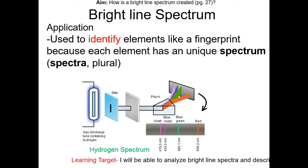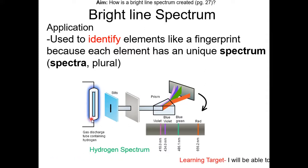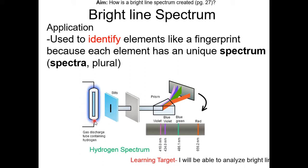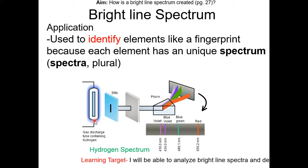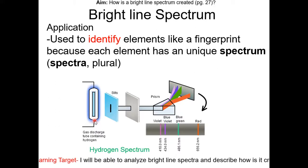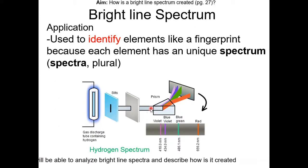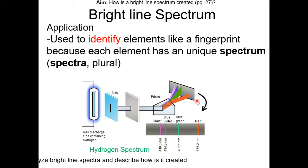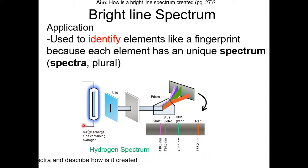Let's go over how a bright light spectrum works. Here we have a discharge tube containing hydrogen gas. We're going to heat up this tube until the atoms are excited. Once they're excited, they'll eventually return back to the ground state, and when they do, they release energy in the form of light. The light passes through this prism, eventually creating a spectrum of hydrogen gas in this example. We'll be doing this in lab.